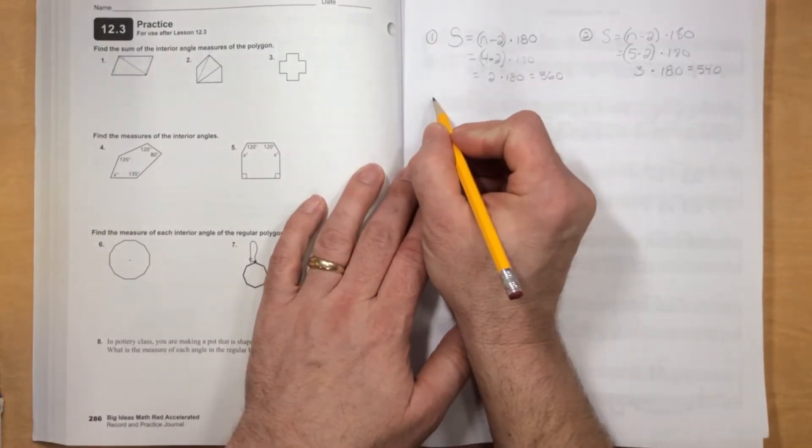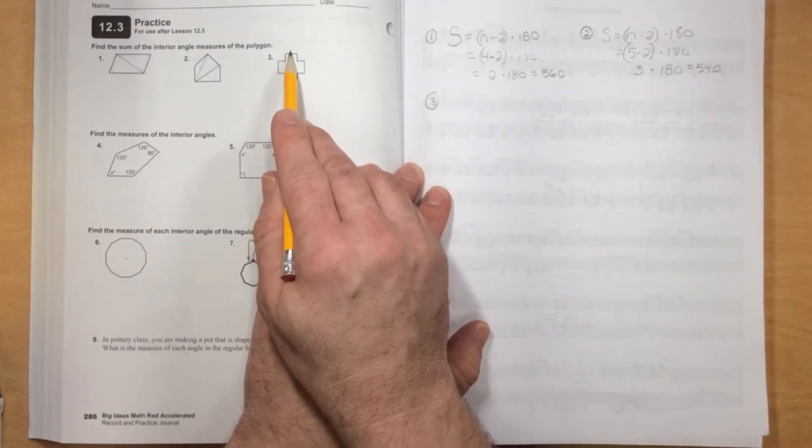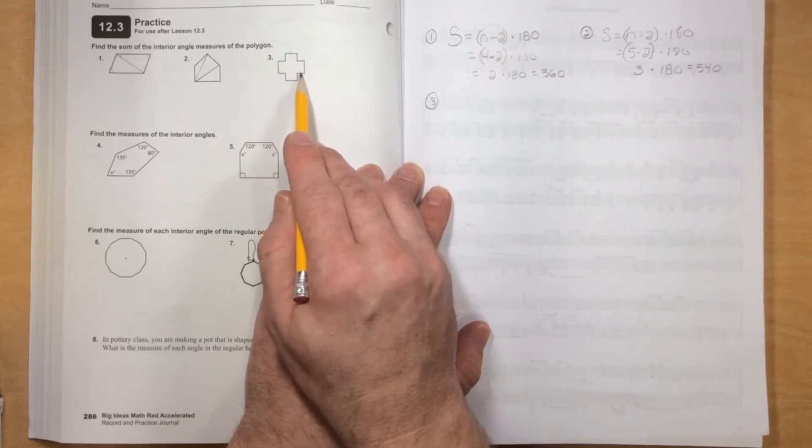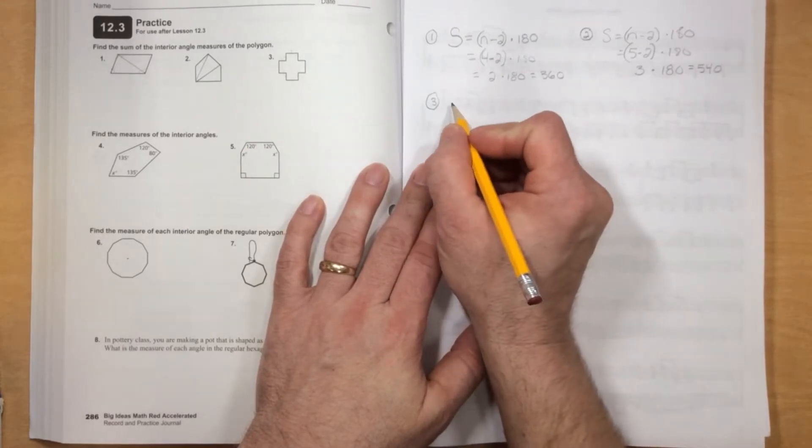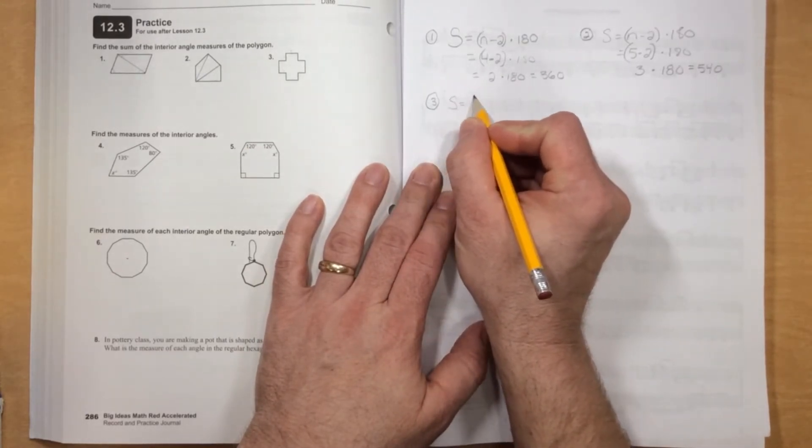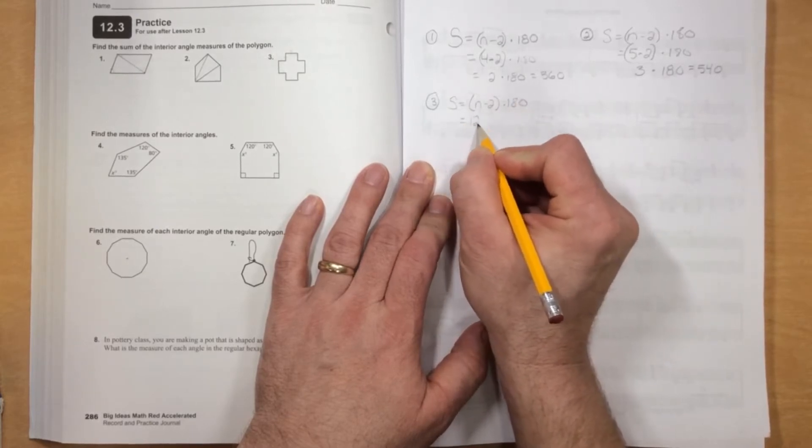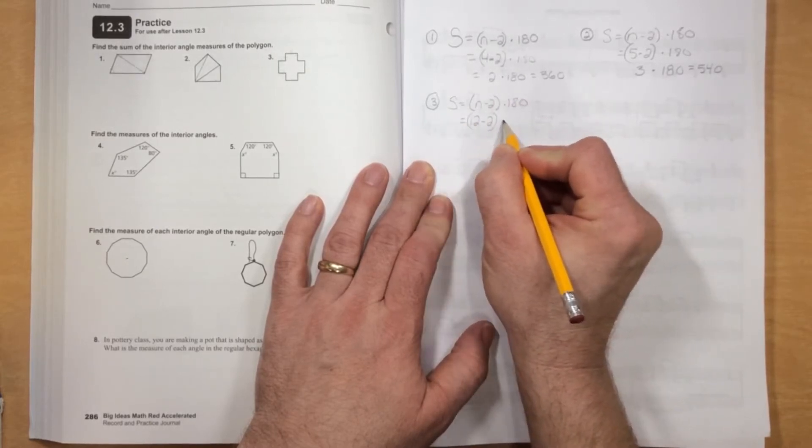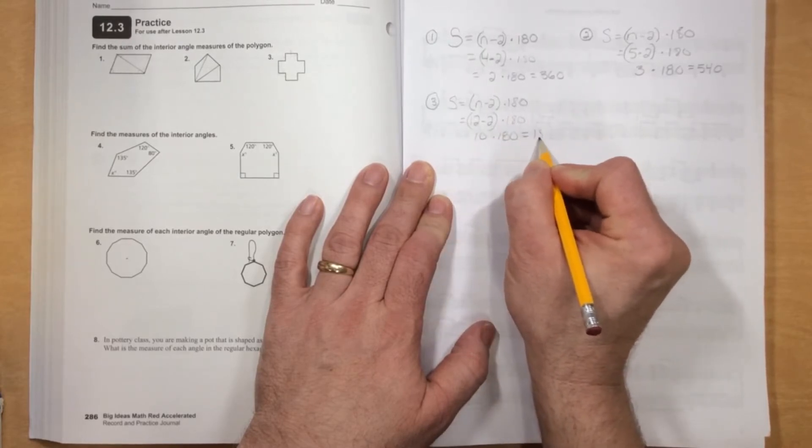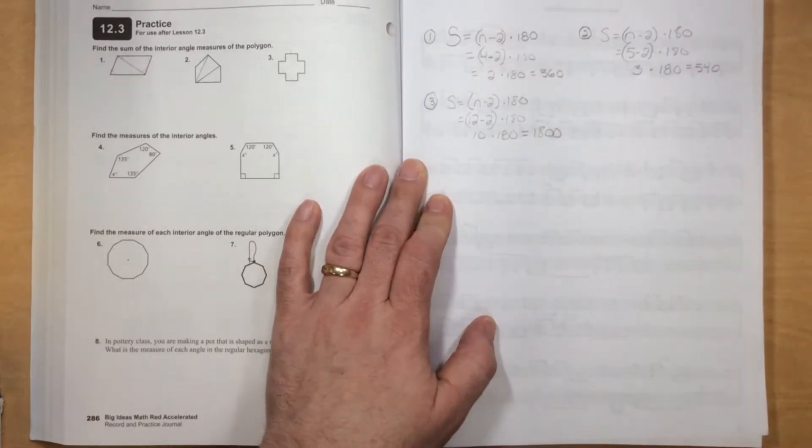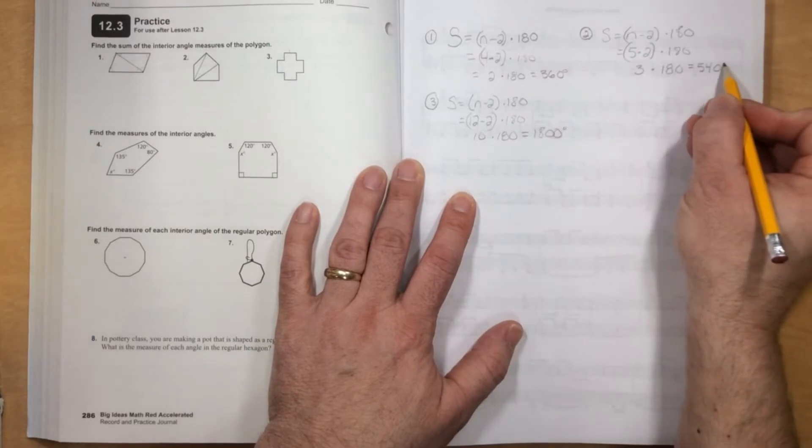Number 3. Well, now we have to count the sides here. I'll start with the top one: 1, 2, 3, 4, 5, 6, 7, 8, 9, 10, 11, 12. That's a 12-sided shape. S equals 12 minus 2 times 180, which is 10 times 180, which equals 1,800 degrees. The sum of the interior angles.